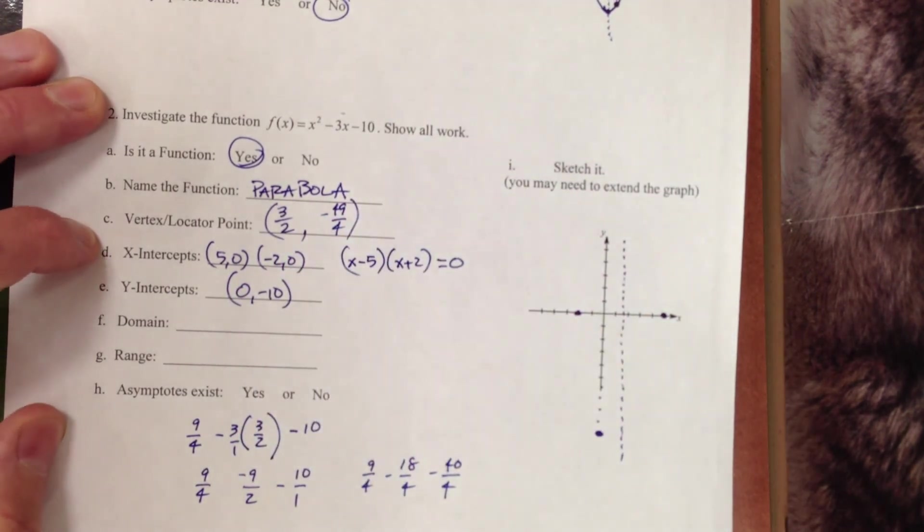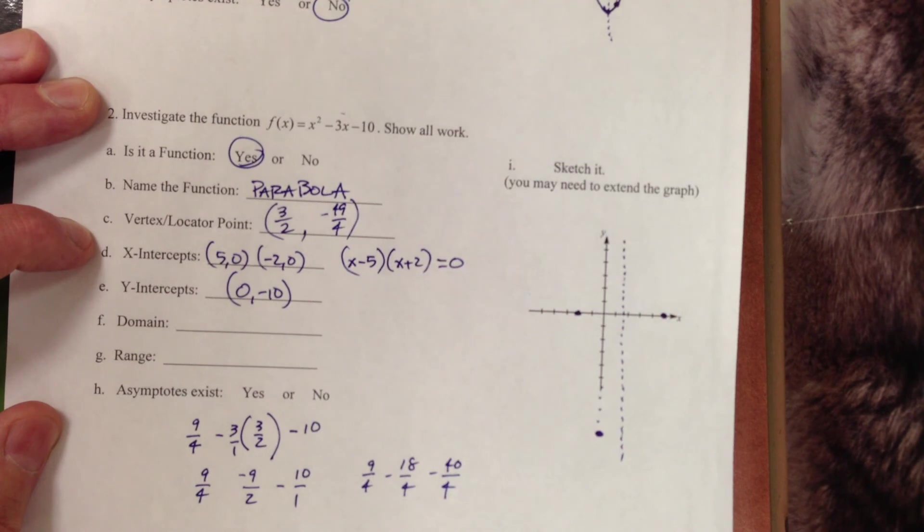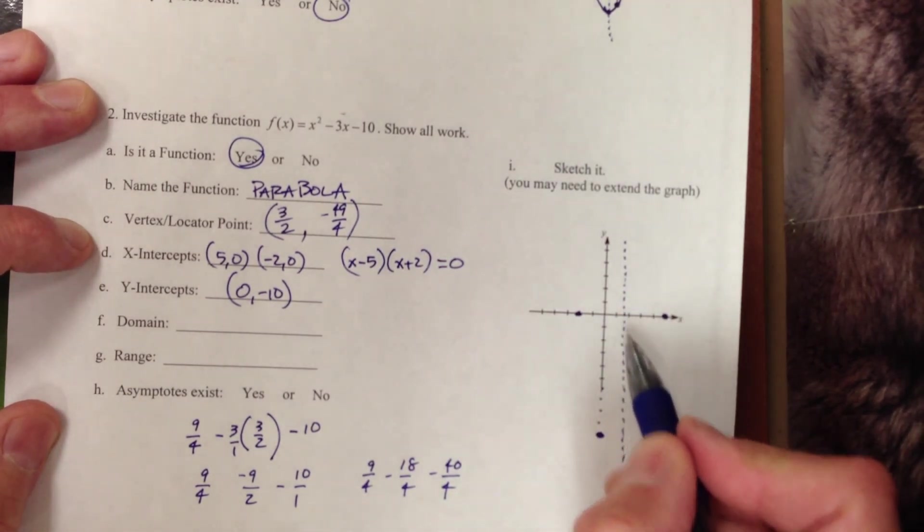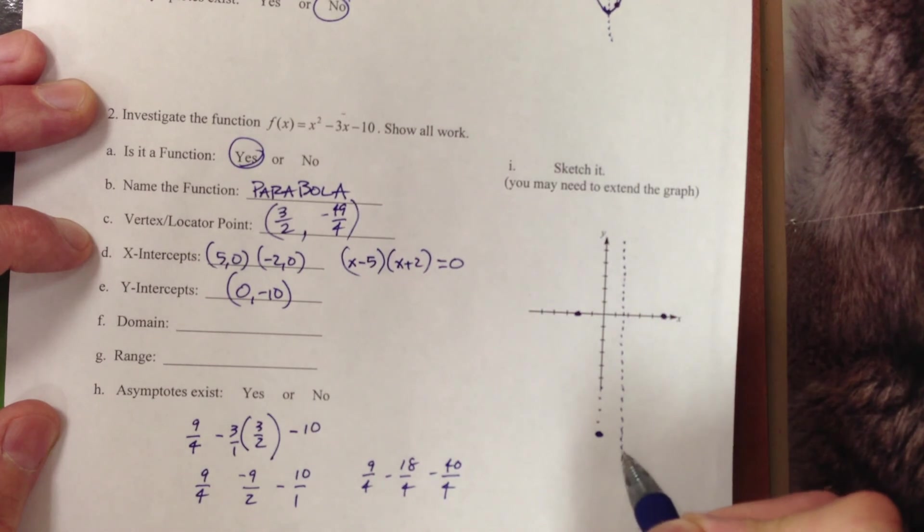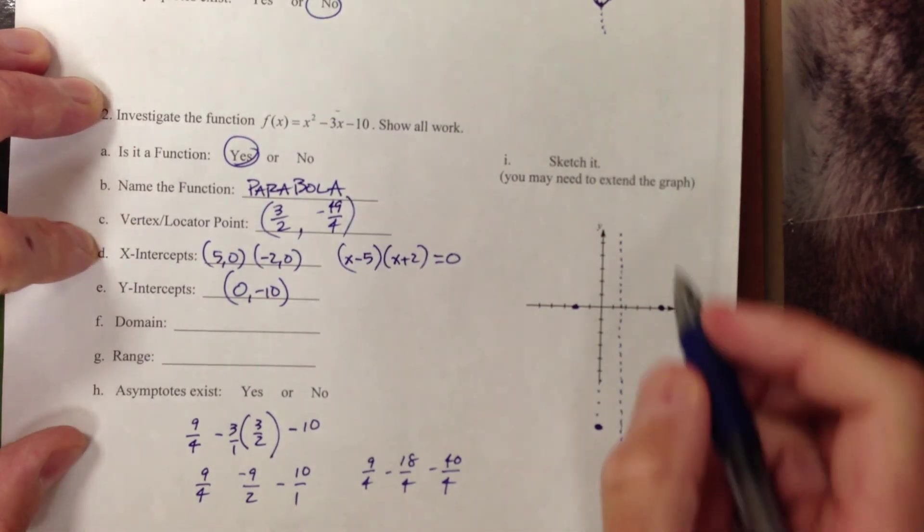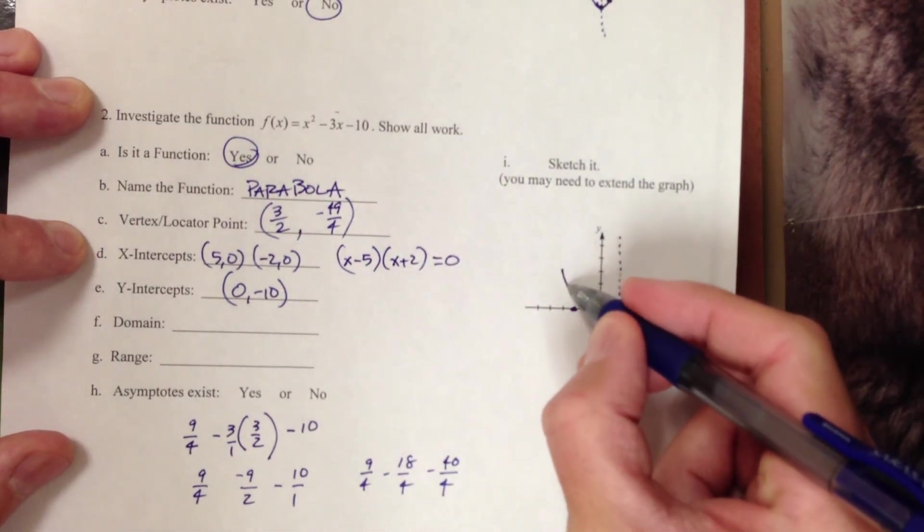Converting that into a mixed number, we are going to get... 40 is 10, 44 is 11, 48 would be 12, so we're looking at negative 12 and a quarter. So negative 12 and a quarter. There's negative 10, 11, 12, and a little bit more. That's going to be roughly where my vertex is. I can shape up my parabola here.